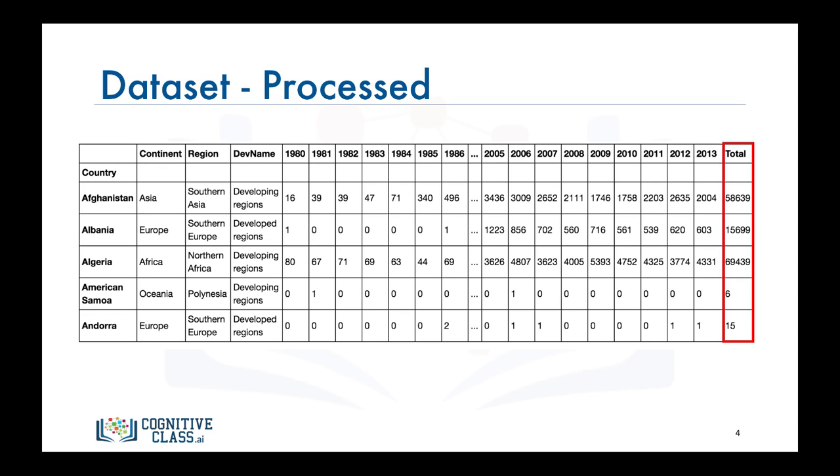Also, let's add an extra column which represents the cumulative sum of annual immigration from each country from 1980 to 2013. So for Afghanistan, for example, it is 58,639 total. And for Albania, it is 15,699 and so on. And let's name our data frame DF_Canada.